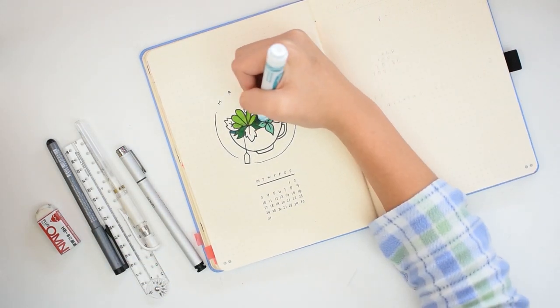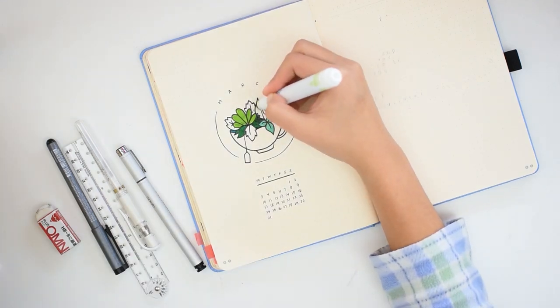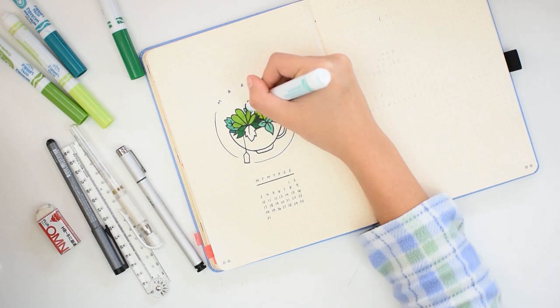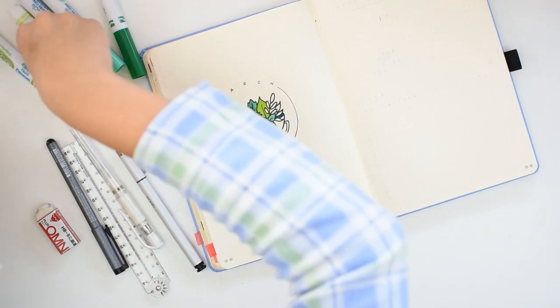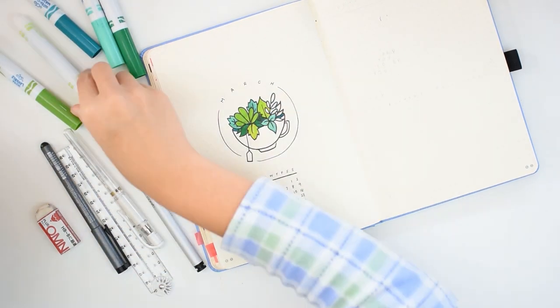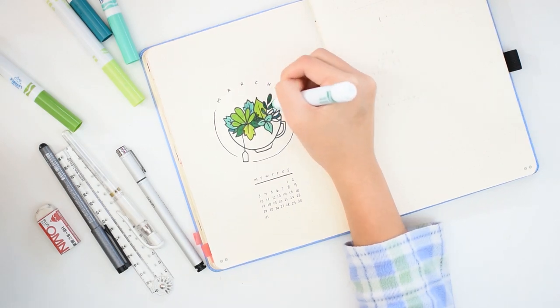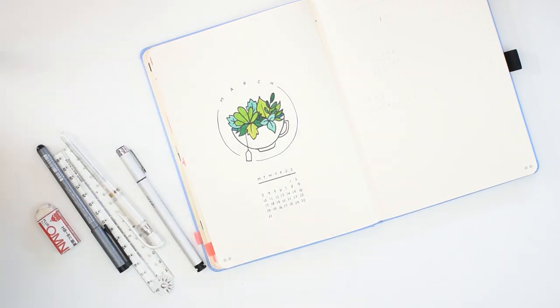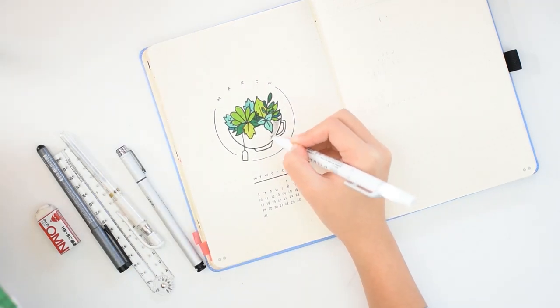And now I'm using a bunch of different green Crayola markers to color in the leaves on these different plants. Beneath the teacup, I did a calendar for March, and the main style that I'm using is really thin text that's spaced out quite widely, and a thicker line underneath the main header.